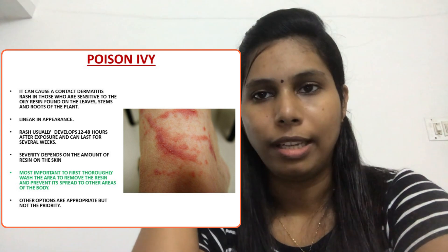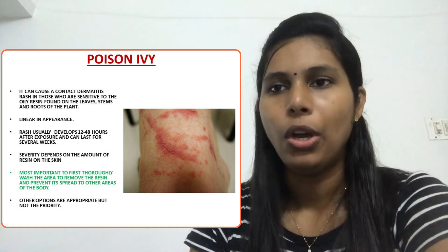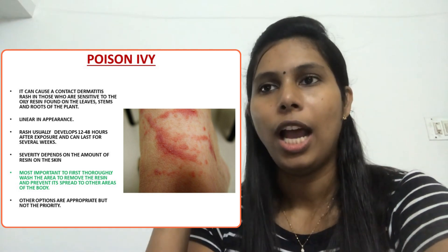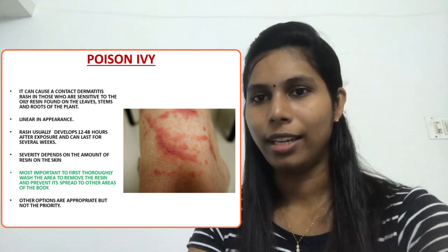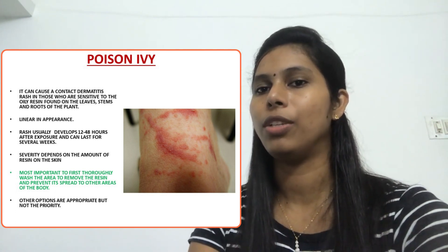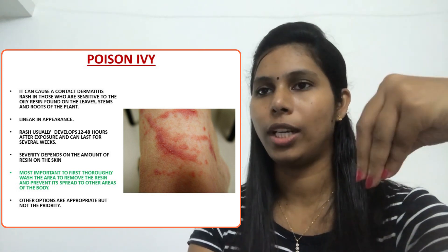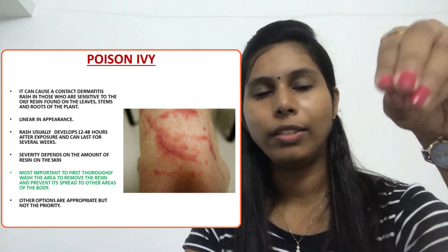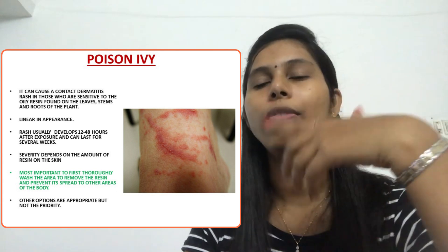Once exposed, we typically develop the rash within 12 to 48 hours. Scratching can spread the reaction. Appropriate measures include preventing scratching and severe itching. The rash can sometimes last for weeks. The severity depends on the amount of resin that contacted the skin — more resin contact means a more severe reaction.